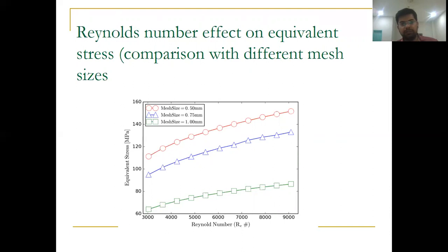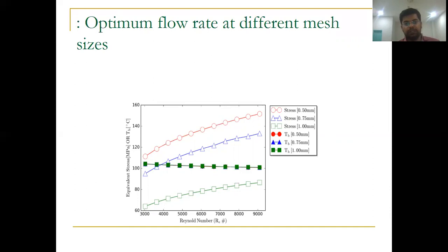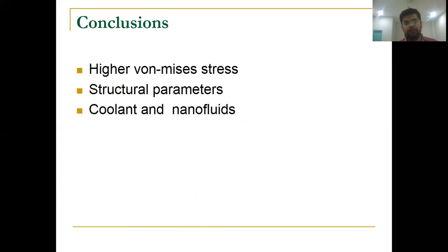Where is the optimum flow rate? If you see that at this point, in the green one at 1mm mesh, we see that it is the optimal flow rate. At Reynolds number 6000, which is 0.7 LPM flow rate, the von Mises stresses and the temperature are in the threshold range.